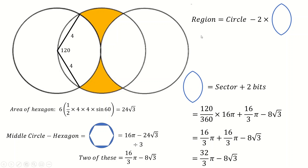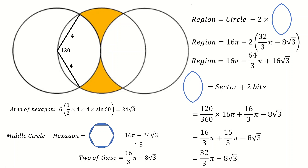The final answer is just the middle circle - 16π - take away 2 lots of the egg shape we just worked out. Running through the algebra gives our final answer. That was method one - not too bad, but certainly not the most efficient thing you can come up with.